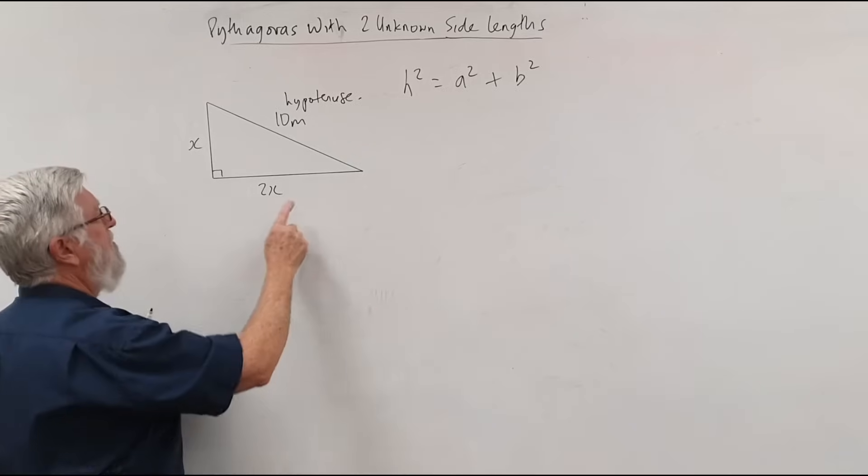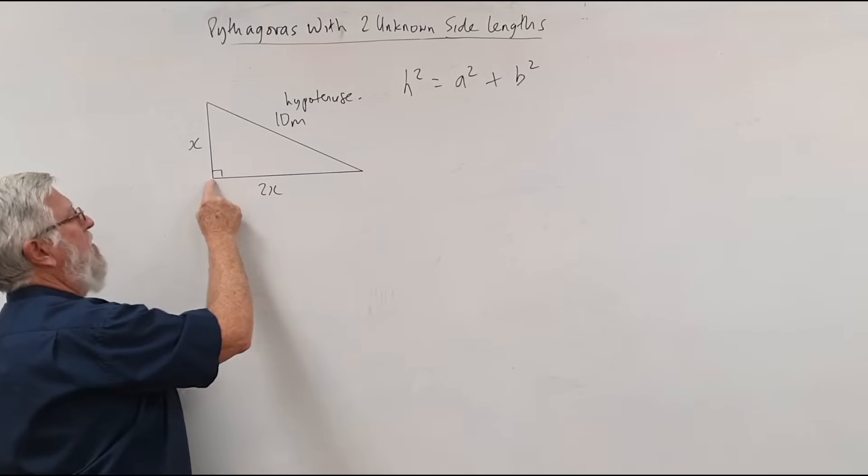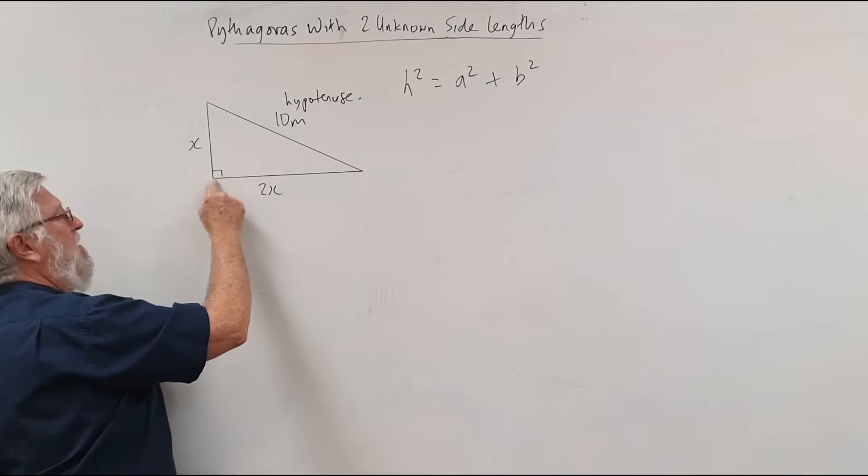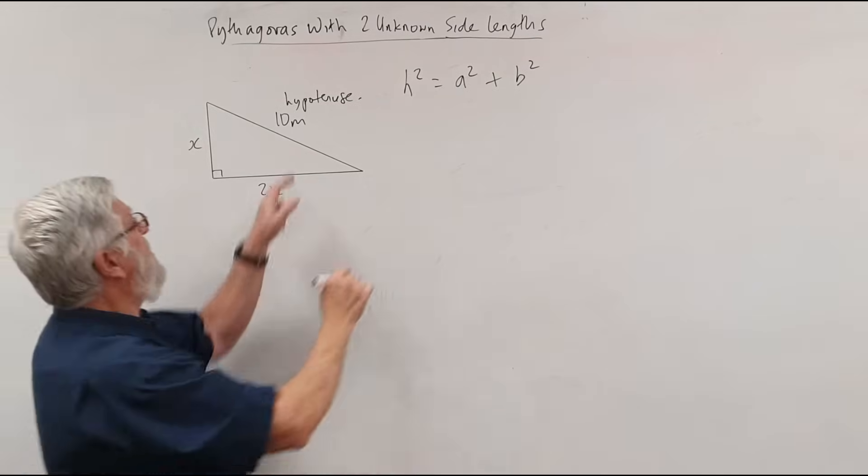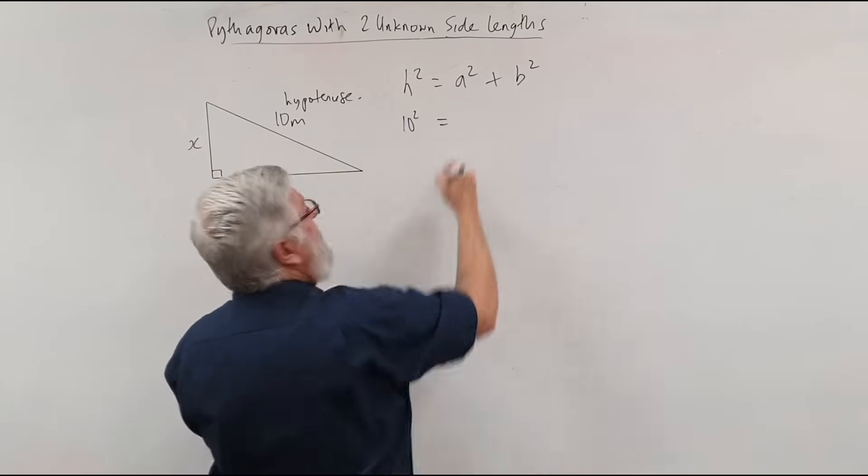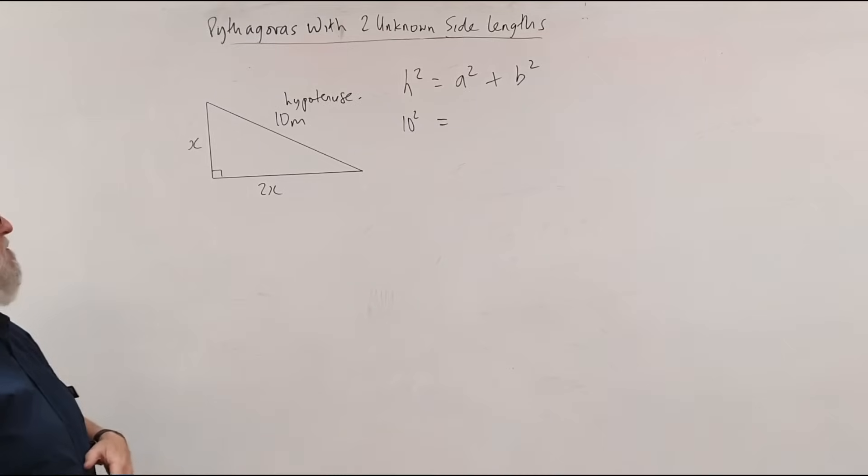Another way you can talk about it is the hypotenuse doesn't touch the right angle. So this one comes to and goes to the right angle and this one comes to and goes to the right angle. So that's got to be 10 squared. Now if you wanted to, you could have written 100 but I'll leave that there for a moment.